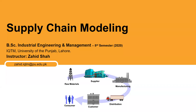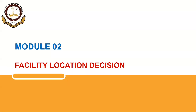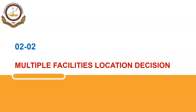Bismillahirrahmanirrahim. Assalamu alaikum and welcome to another lecture on supply chain modeling. We were on module 2, that is facility location decision, and in the last lecture, lecture 2-1, we discussed some methods to locate a facility: the center of gravity method, the Weber method, the factor rating method, and the analytic hierarchy process. In the second part of this module, we are going to discuss multiple facilities location decisions. We will build a mathematical model using mixed integer linear programming technique and then solve that model using Microsoft Excel.